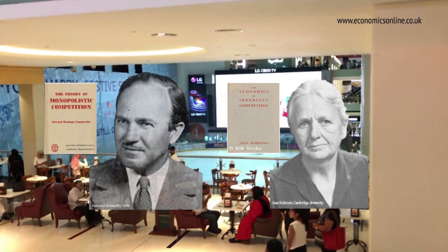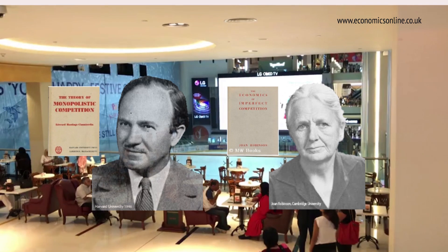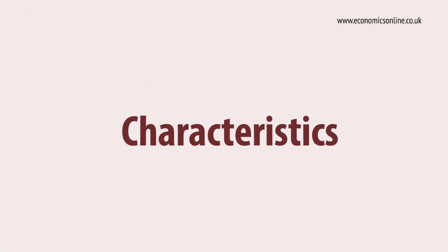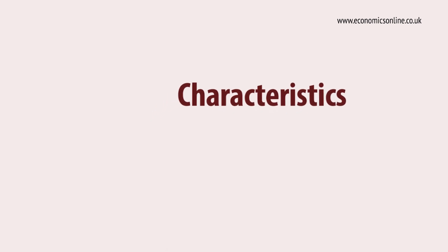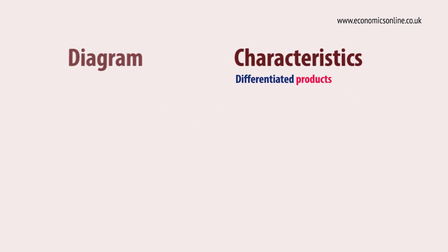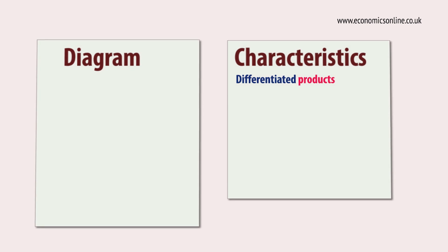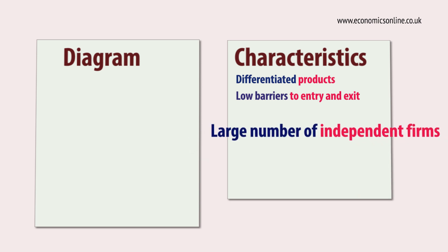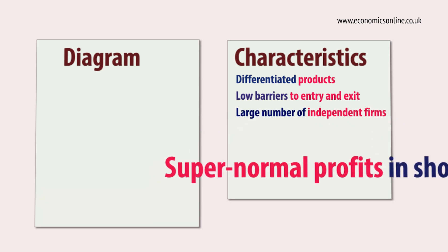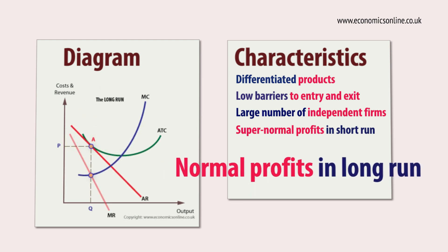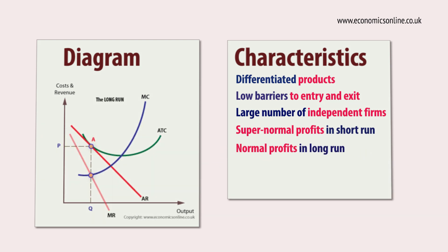Most high streets are populated with firms operating under monopolistic competition. The key characteristics of this market form are differentiated products, low barriers to entry and exit, and a large number of independent firms. Firms can exploit their differences and make supernormal profits in the short run. Only normal profits are available in the long run as new firms enter.